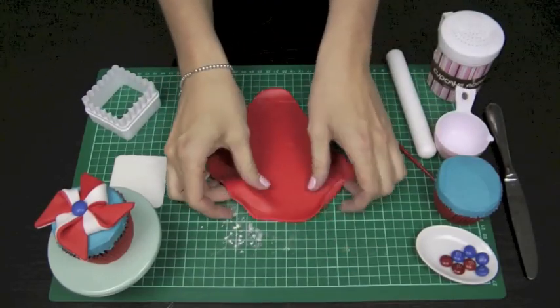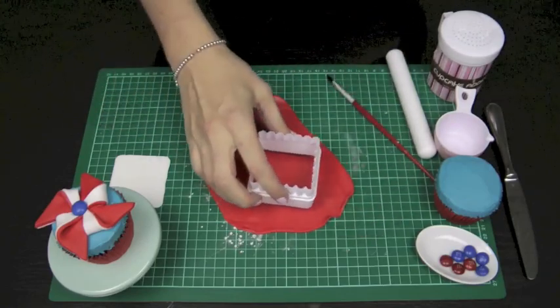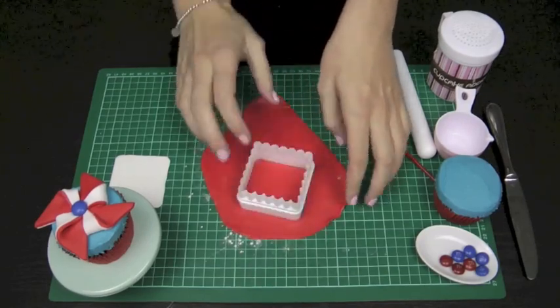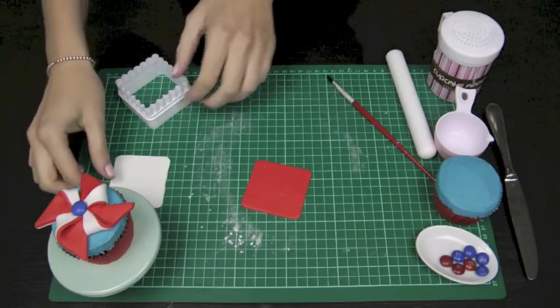Alright, so you'll also notice after I've finished rolling, I do just lift it up and put it back down again. That's just to make sure that it's not stuck to the bench anywhere. Take your cookie cutter, push it down, wiggle it back and forward to neaten up the edges again. And you've got your red and your white.